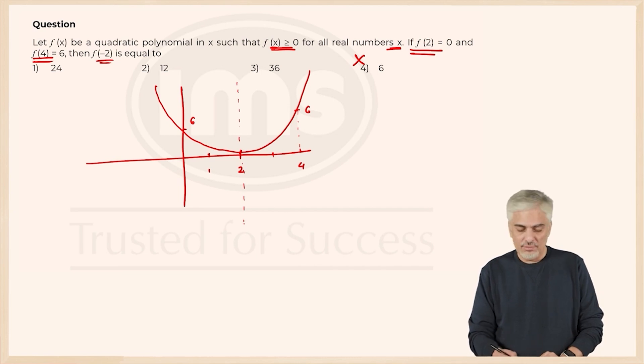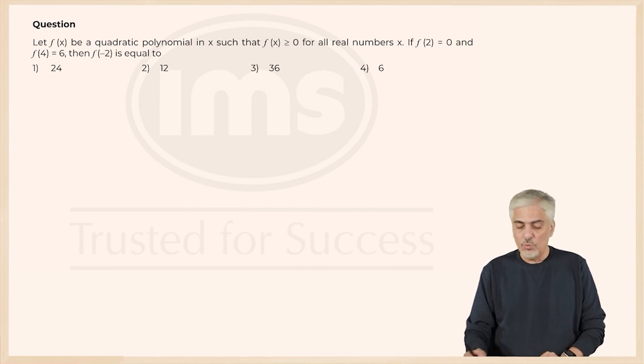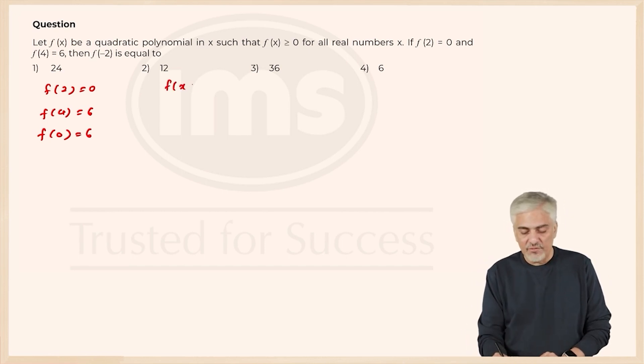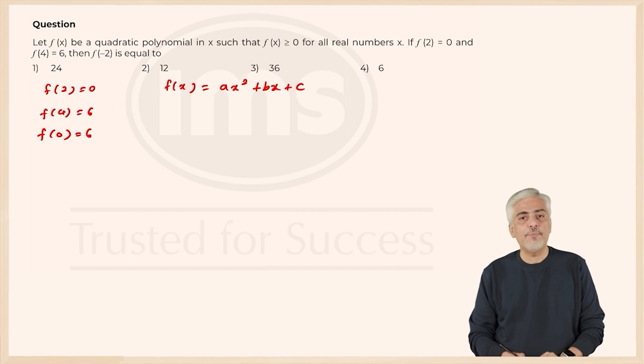Let us try. So I am just going to erase this so we have some space. What do we have? We have f of 2 is 0, f of 4 is 6 and I have f of 0 is also 6. Now let the quadratic function be f of x is equal to a x square plus b x plus c. That is your quadratic polynomial.